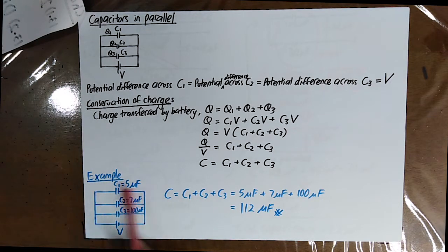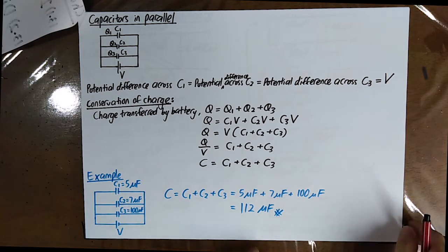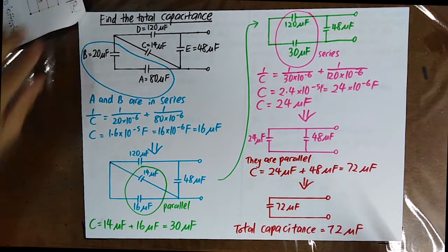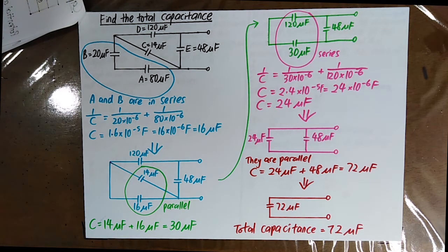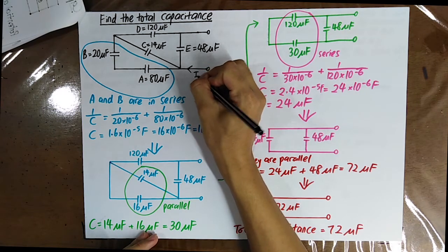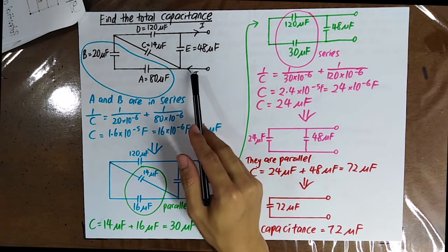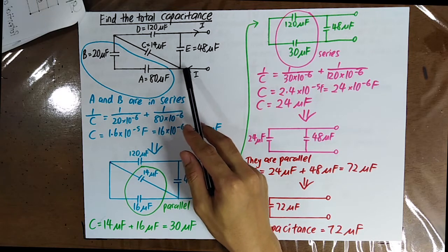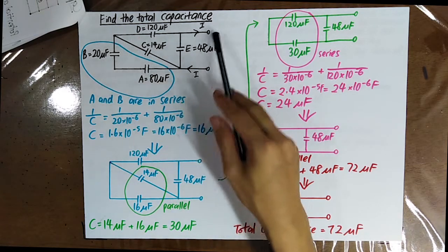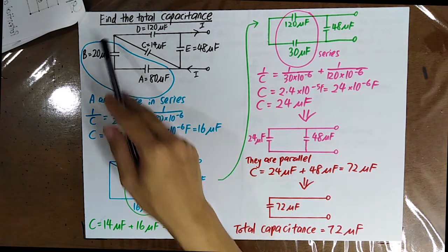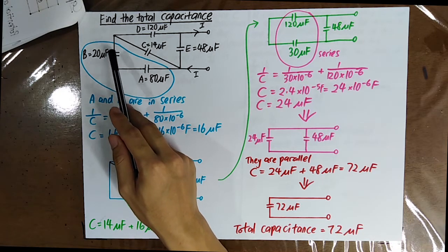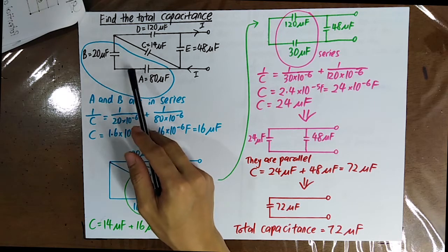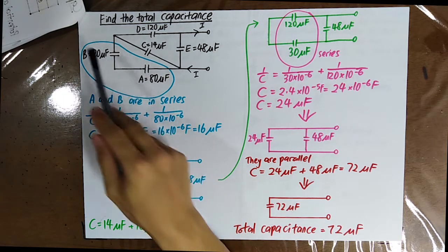For example, in this question, the equivalent capacitance of all the capacitors is found by simply summing them up. To find the total capacitance, imagine yourself to be a current. At a junction, you can choose whether to walk this path, this path, or this path. If you choose one path and pass through capacitor A, you have no choice but to pass through capacitor B. When you do not have freedom to choose, A and B are connected in series.